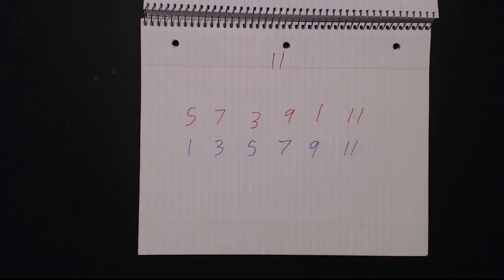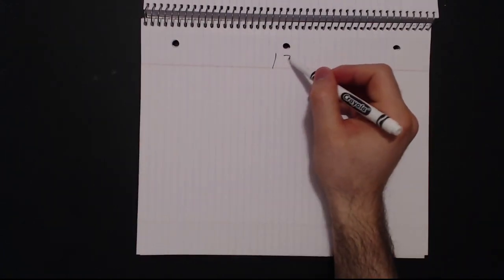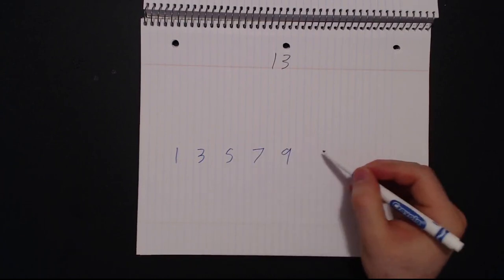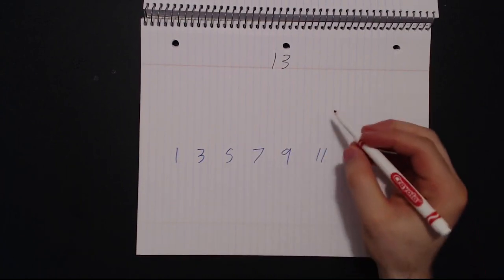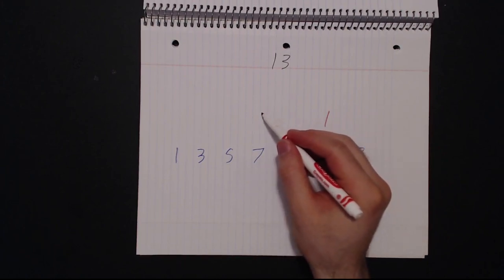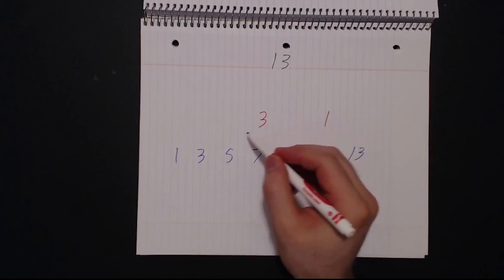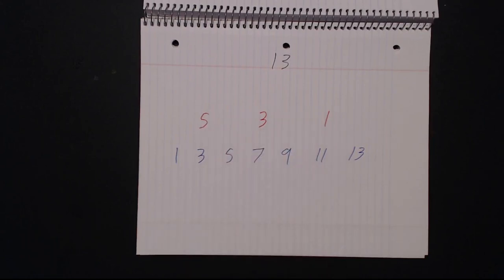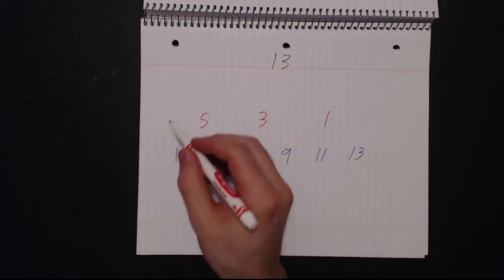What we did just now might sound a little confusing so I'm going to do it with you a few more times. Count the odd numbers from 1 to 13. Next, count the odd numbers for every other number starting from the right on to the left, skipping 13.